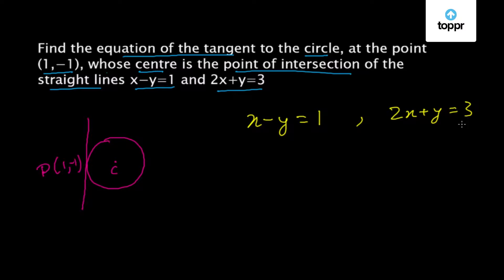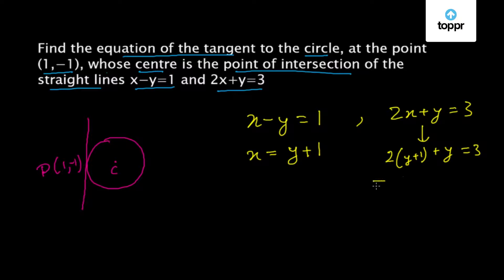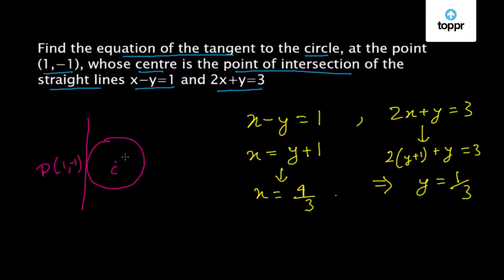Now let us find their point of intersection. From the equation x minus y equal to 1, we get x equal to y plus 1. Substituting into 2x plus y equal to 3, we get 2(y+1) plus y equal to 3, giving y equal to 1/3. Substituting y equal to 1/3 back, we get x equal to 4/3. So the centre of the circle is (4/3, 1/3).